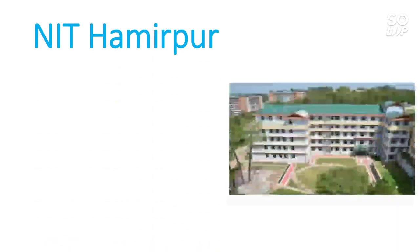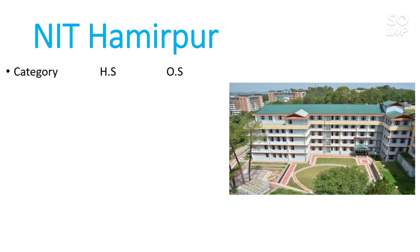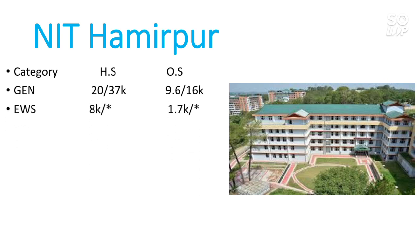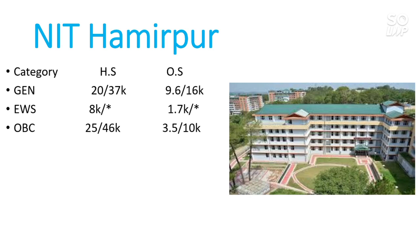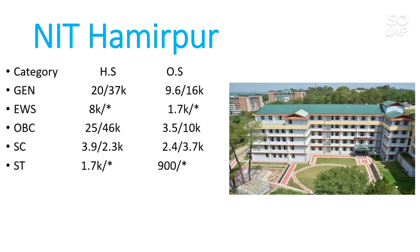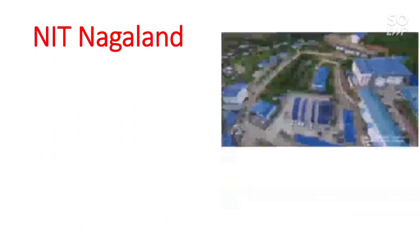Next is NIT Hamirpur. Category-wise cutoff: General rank 20,000–33,000 to 37,000 for home state, and 9,600–16,000 male and female for other state. EWS: home state 8,000, other state 1,700, no female reservation. OBC other state: male 3,500, female 10,000. SC other state: male 2,400, female 3,700. For ST: male other state 900, no female reservation.